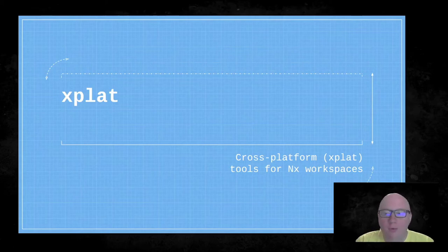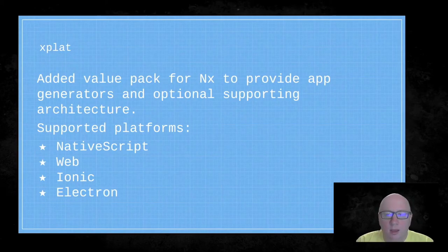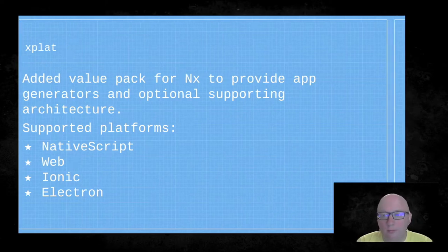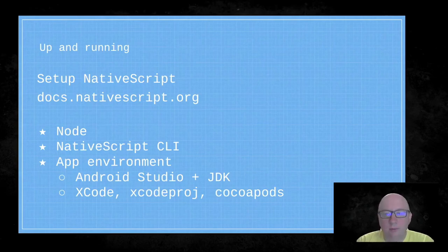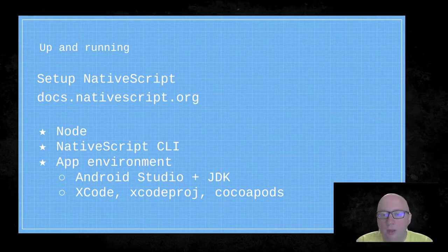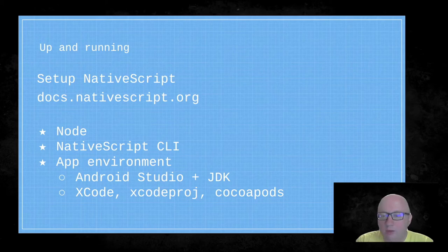Let's talk through Xplat, because it's what I use. Xplat is cross-platform tools for NX workspaces — an added value pack for NX to provide app generators and optional supporting architecture. It supports various platforms including NativeScript, Web, Ionic, and Electron. To get set up, you'll need to configure NativeScript via docs.nativescript.org: install Node with NVM, the NativeScript CLI, and your app environment. For Android you need Android Studio and the JDK; for iOS you need Xcode, Xcode Proj, and CocoaPods. The documentation is excellent — I recently set up a new machine and it was no problem at all.